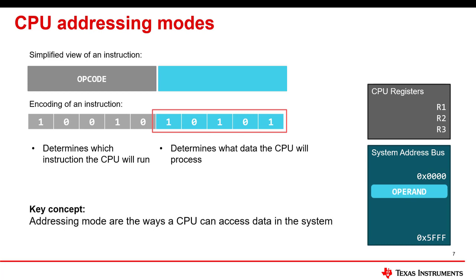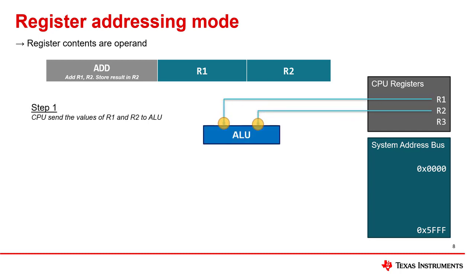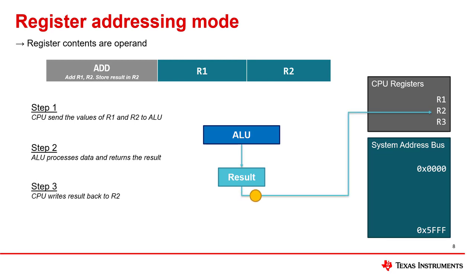We can think of addressing modes as the ways a CPU can access data in a system. The first addressing mode we'll discuss is often referred to as the register addressing mode. In this addressing mode, the operands are registers within the CPU. As an example, let's see how the add instruction works when both operands use register addressing. The CPU sends the values of R1 and R2 to the ALU. The ALU processes the data and returns the result. Finally, the CPU writes the result back to R2. This addressing mode is simple and therefore fast because all of the data is contained within the CPU.